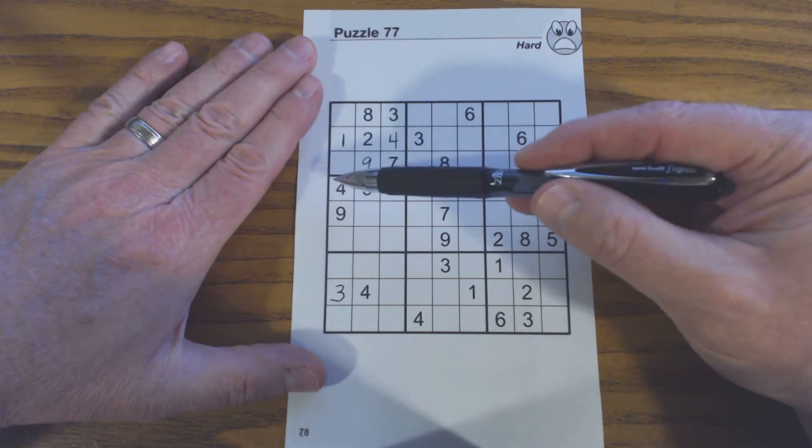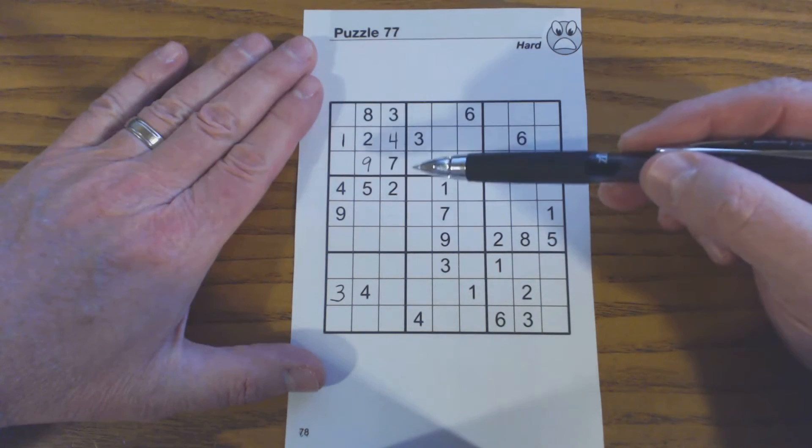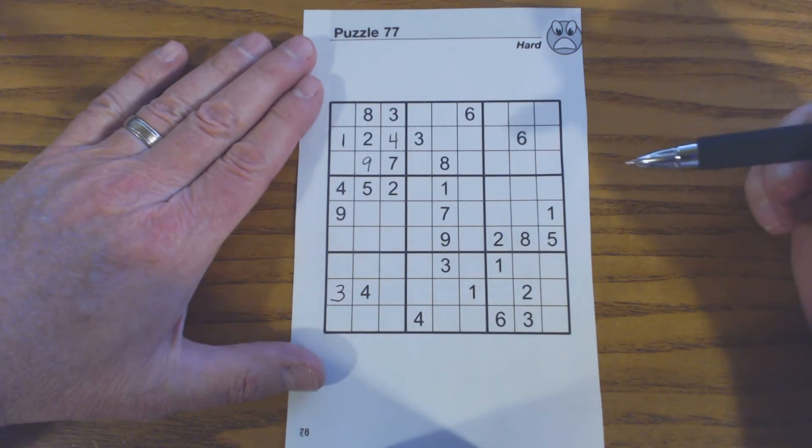We know the one has to fit in this column because the rest of the square is filled out, but how did we know that was in row two?